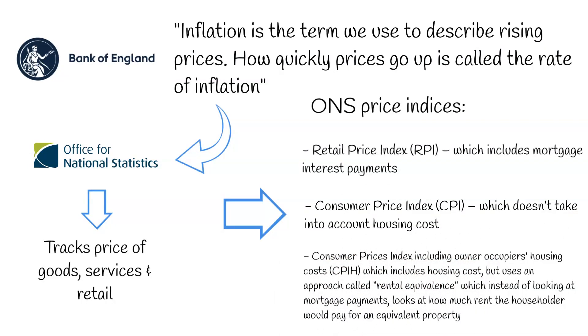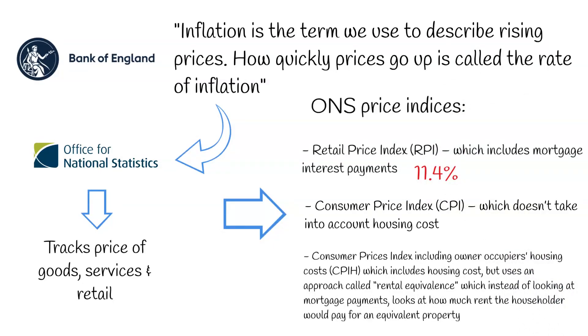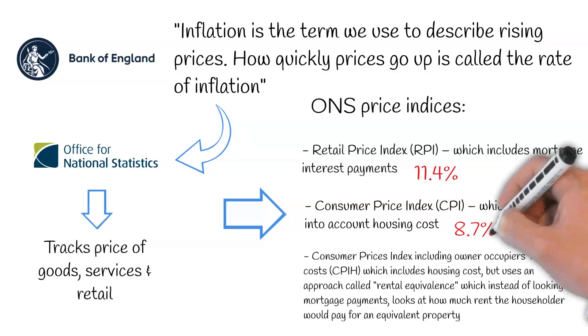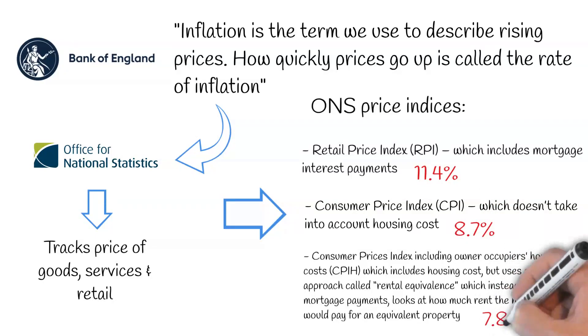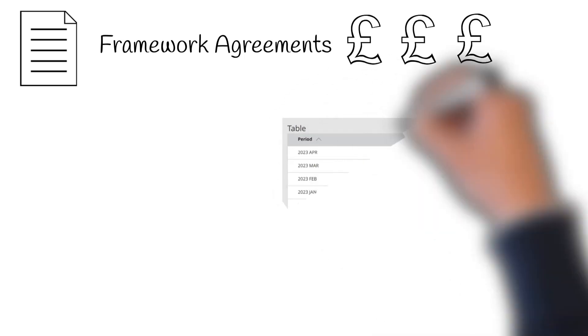Although all three aim to measure the rate of inflation, they have separate metrics for determining this and as a result produce different figures. For example, in April 2023, RPI was measured at 11.4% year-on-year, opposed to CPI at 8.7% and CPIH at 7.8%. In framework agreements, which use a predetermined set of rates, you may find provisions which allow for yearly adjustments based on one of the above inflation indices.